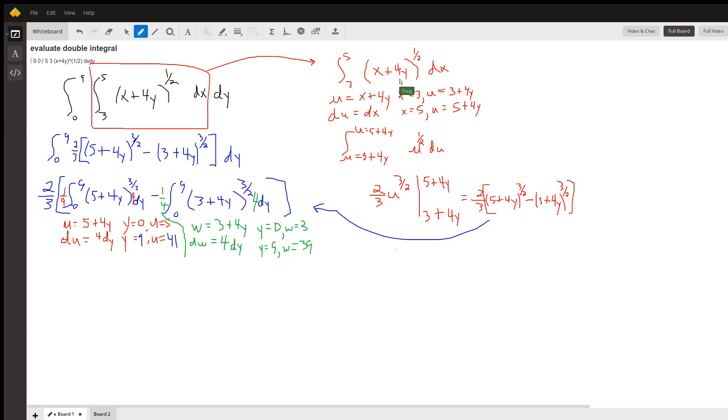x plus 4y is replaced with a u. The antiderivative of u to the one-half is two-thirds u to the three-halves evaluated at these limits. And that gives us this ugly-looking expression here.